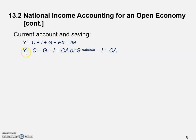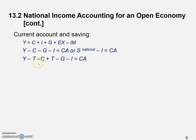National saving is Y minus C minus G — how much we produce (national output, also national income) minus what households consume and what government consumes. That's national saving. Now we apply a mathematical trick: we subtract T and add T on the left-hand side, keeping all other parts the same. These two terms cancel out, returning us to the previous equation.